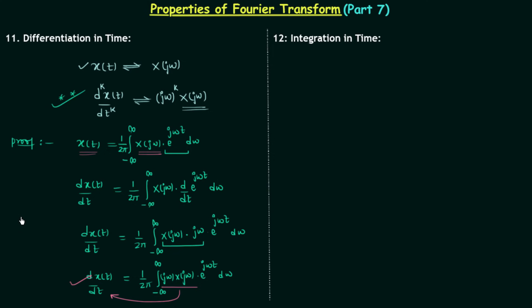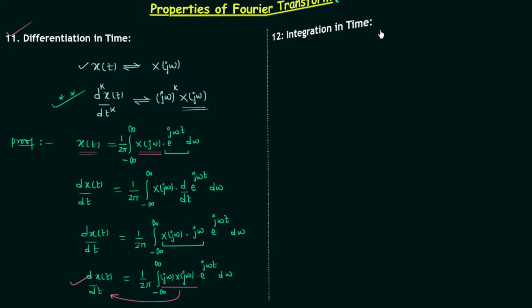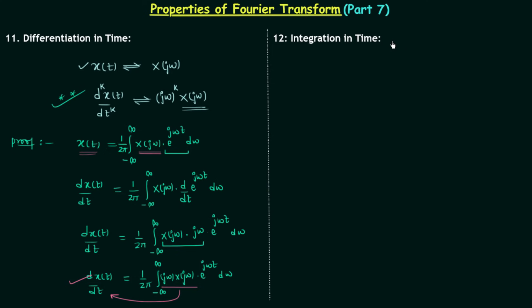We have proved the differentiation in time property. Now we will move to the next property, which is integration in time. First we will understand the property and then prove it. Let's say there is a time domain signal x(t) with Fourier transform X(jω). We will perform the integration of x(t) from minus infinity to some instant of time t.